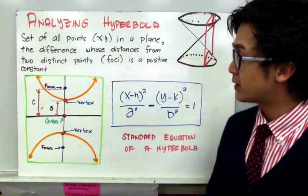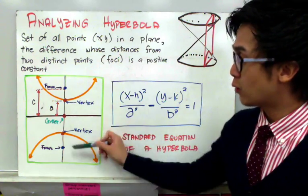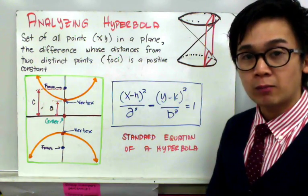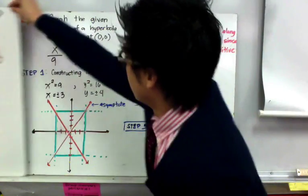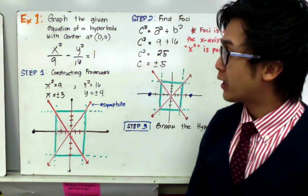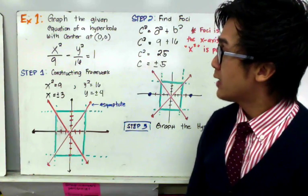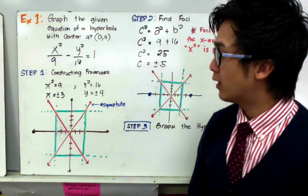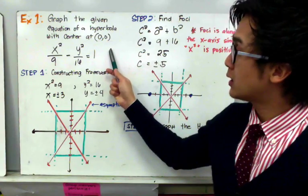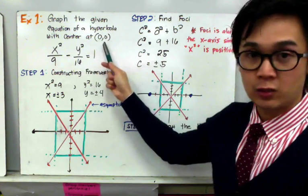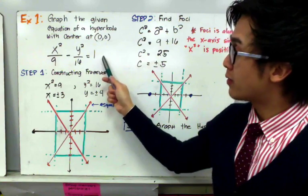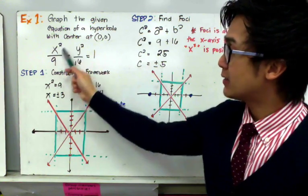Just like an ellipse, we have the same parts of the hyperbola: the vertices, the foci, and the center. We're going to work on problems involving hyperbola. For our first example, we're going to learn how to graph a hyperbola. Compared to any other conic section, constructing the graph of a hyperbola requires a little bit of construction in our x-y plane. Let's graph the equation with center at (0, 0): x squared all over 9 minus y squared all over 16 equal to 1.